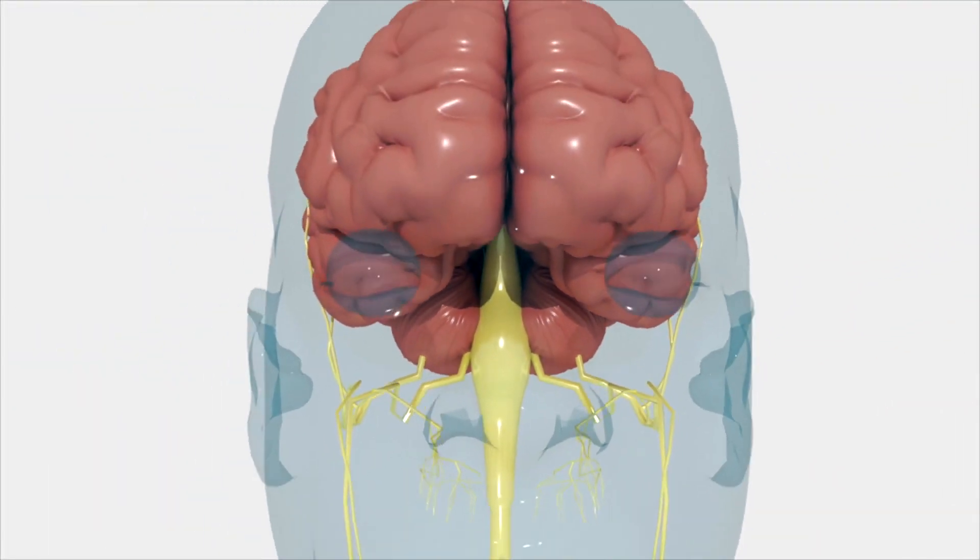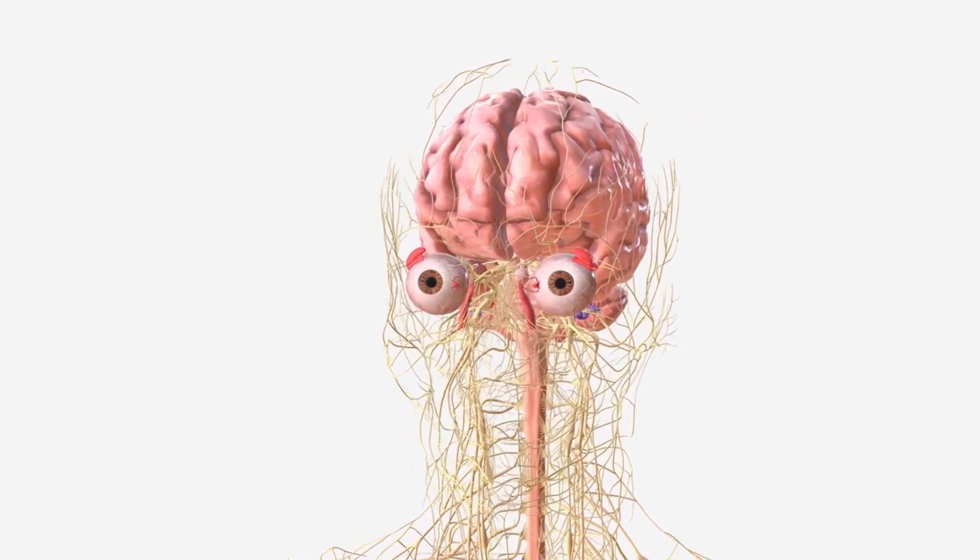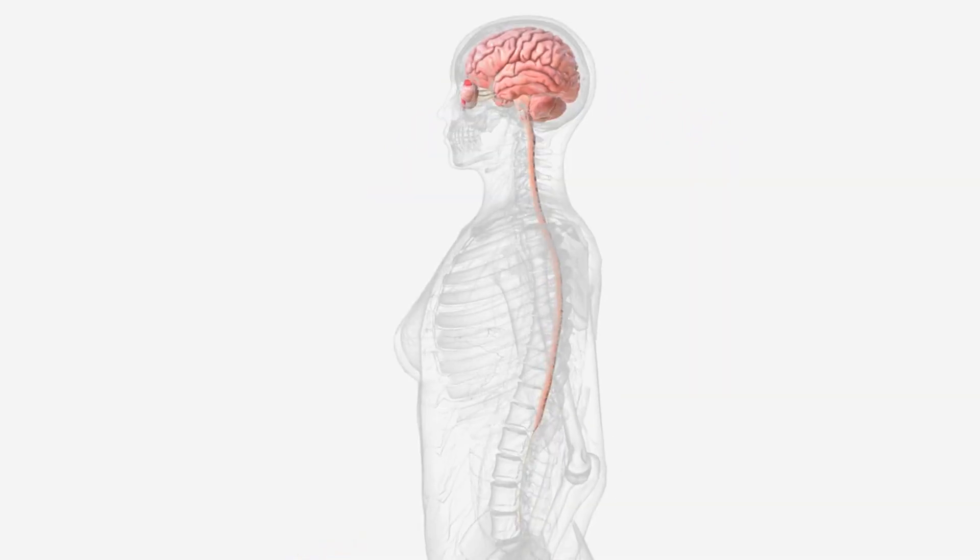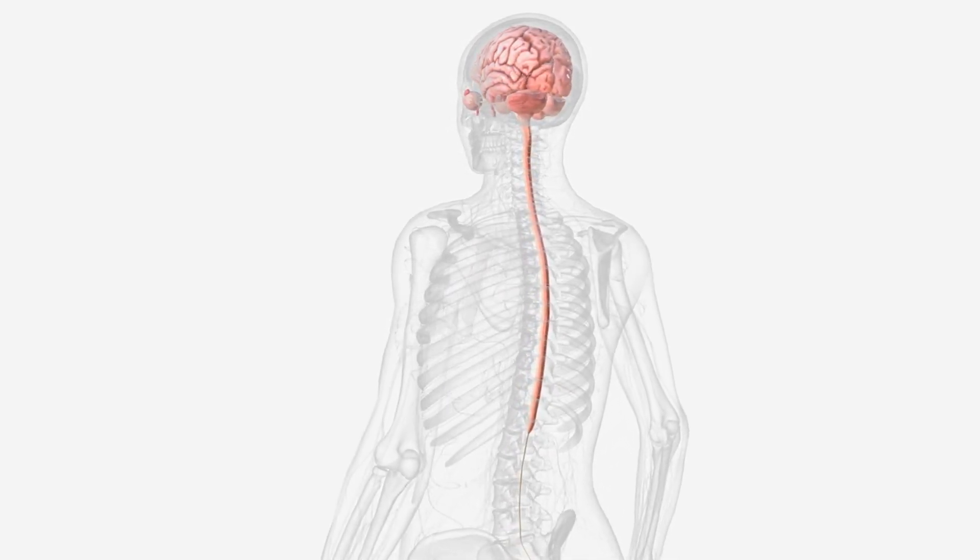The nervous system. Next, let's explore the nervous system, which is divided into the central and peripheral nervous systems. The central nervous system includes the brain and spinal cord, acting as the main control center.